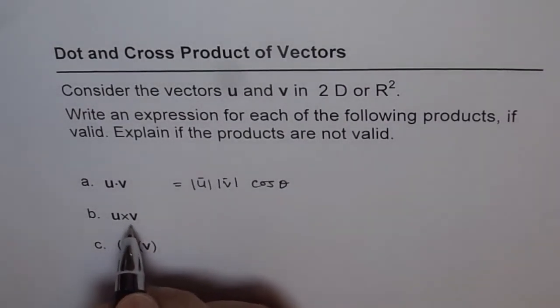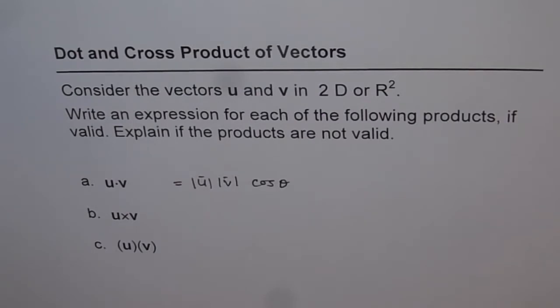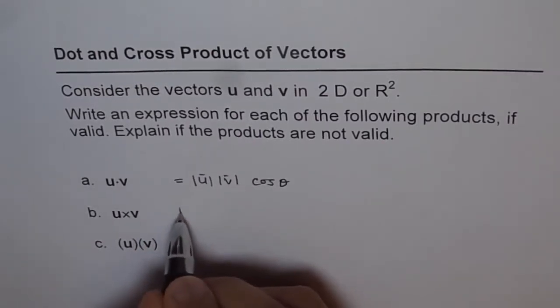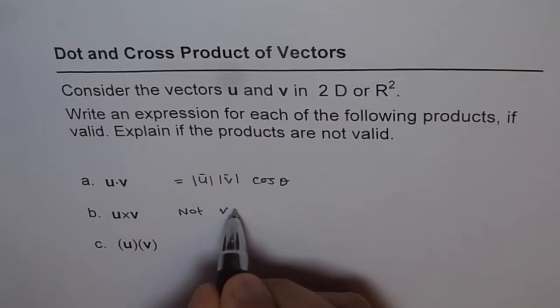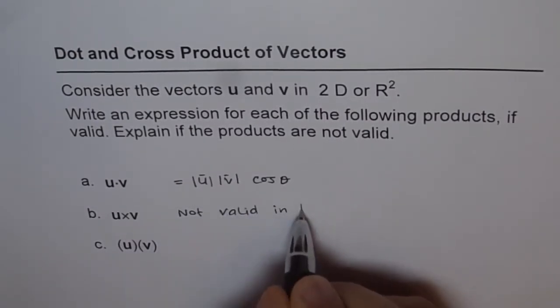Now u cross v. u cross v is |u||v|sin θ, but it has a direction. The direction of u cross v is perpendicular to both u and v. That means it cannot be contained in R². Therefore, this is not valid in R².